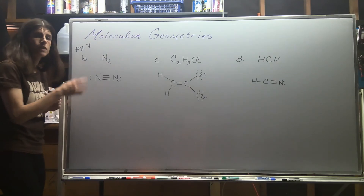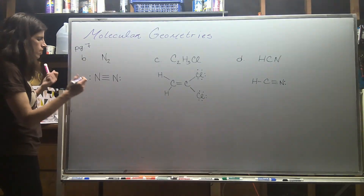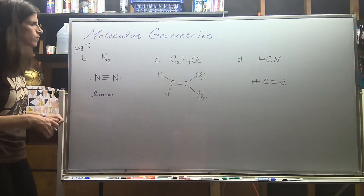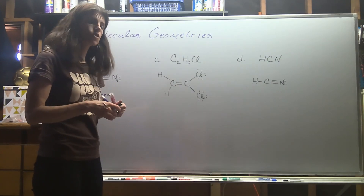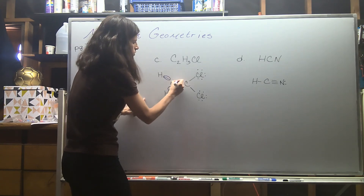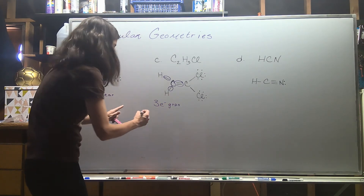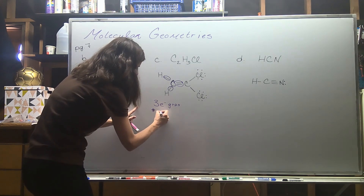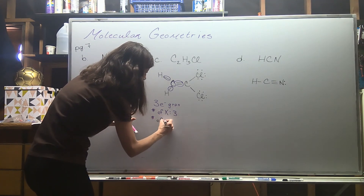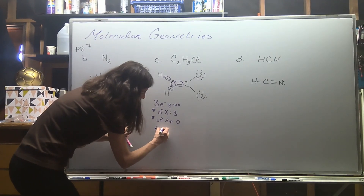On the top of page seven, we have diatomic nitrogen. If you have a diatomic compound — just two atoms — it's automatically going to be linear; you don't need a table or analysis. For the next compound with two central atoms, the first carbon has three electron groups, all involved in bonding, zero lone pairs — the 3-3-0 combination corresponds to trigonal planar.